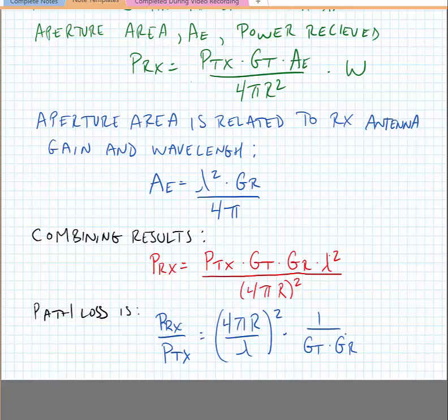We have here a geometric and frequency-dependent parameter, and a transmitting and receiving antenna parameter. This tells us how much power we get across the channel given physical distances and basic characteristics of the transmitting and receiving antennas. With that, we'll stop and start getting into more hardware-oriented topics such as impedance matching in the next lectures.